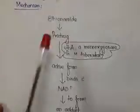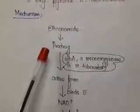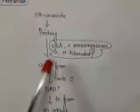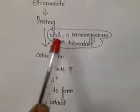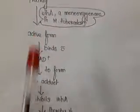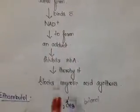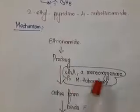Ethionamide has a similar mechanism to INH. It is also a prodrug that must be converted to an active form. In the case of INH we use the enzyme catalase peroxidase (KatG); here we use EthA, which is a monooxygenase present in Mycobacterium tuberculosis. The active form binds with NAD+ to form an adduct that inhibits InhA, thereby blocking mycolic acid synthesis. The similarities are: both are prodrugs and both inhibit mycolic acid synthesis. The main difference is the activating enzyme — catalase peroxidase for INH, and EthA monooxygenase for ethionamide.